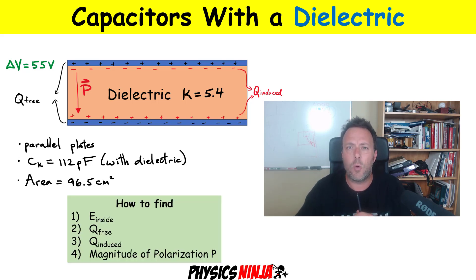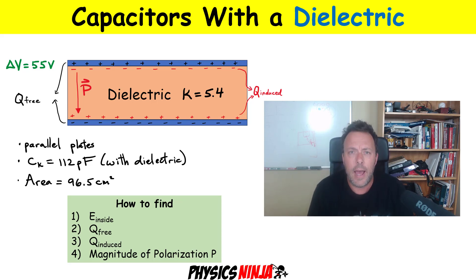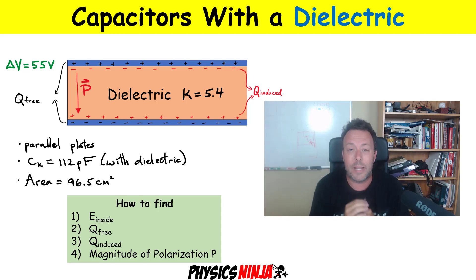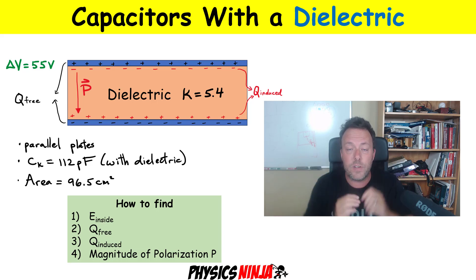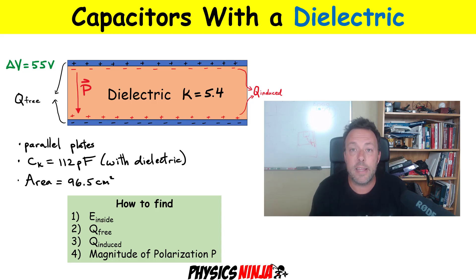I have a couple questions for you. How would you find the total electric field inside that dielectric? How would you find the free charge that's on the metal plates? How do you find the induced charges on the surface of this dielectric once it's inside? And one last question: how would you calculate the polarization P?